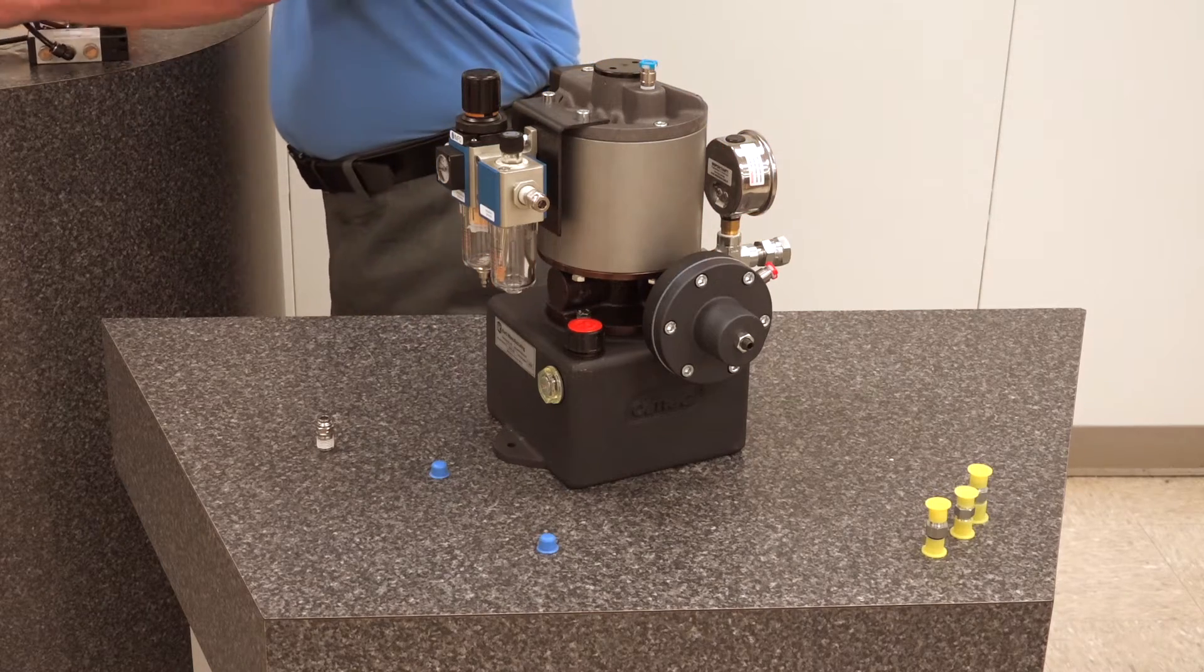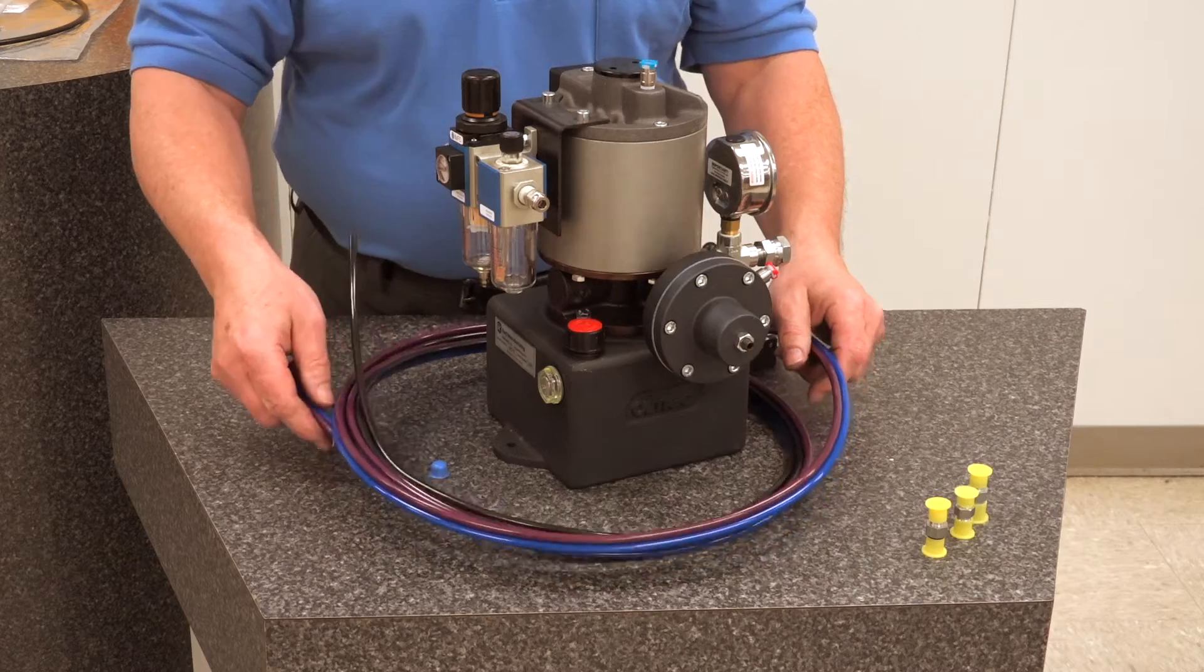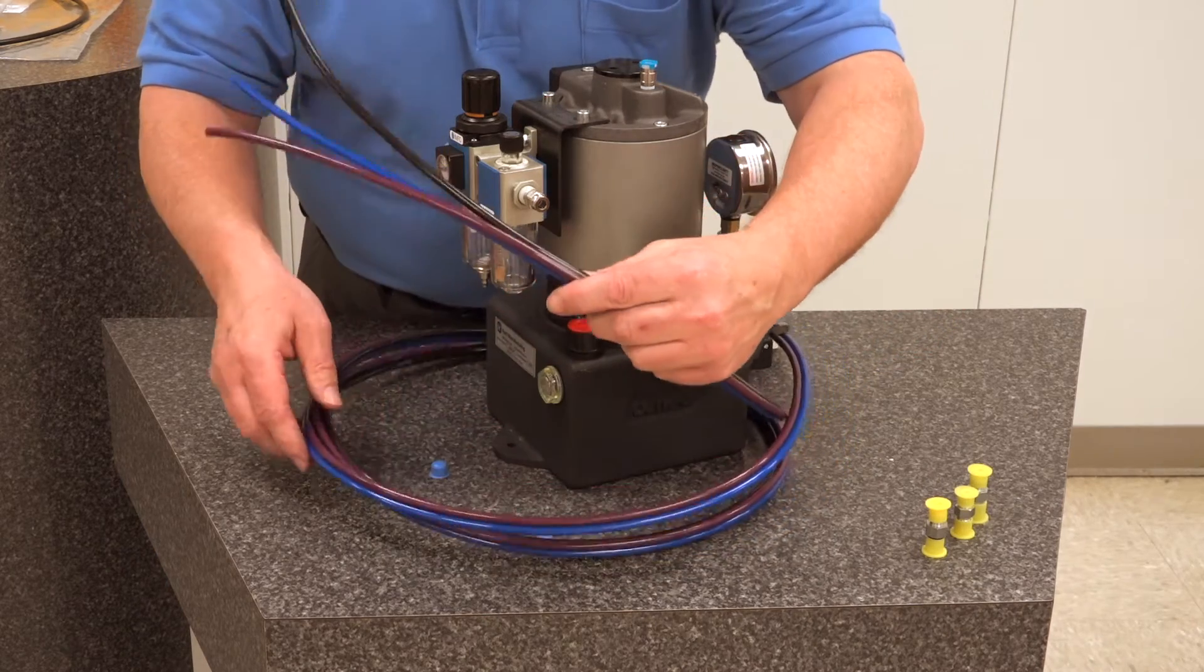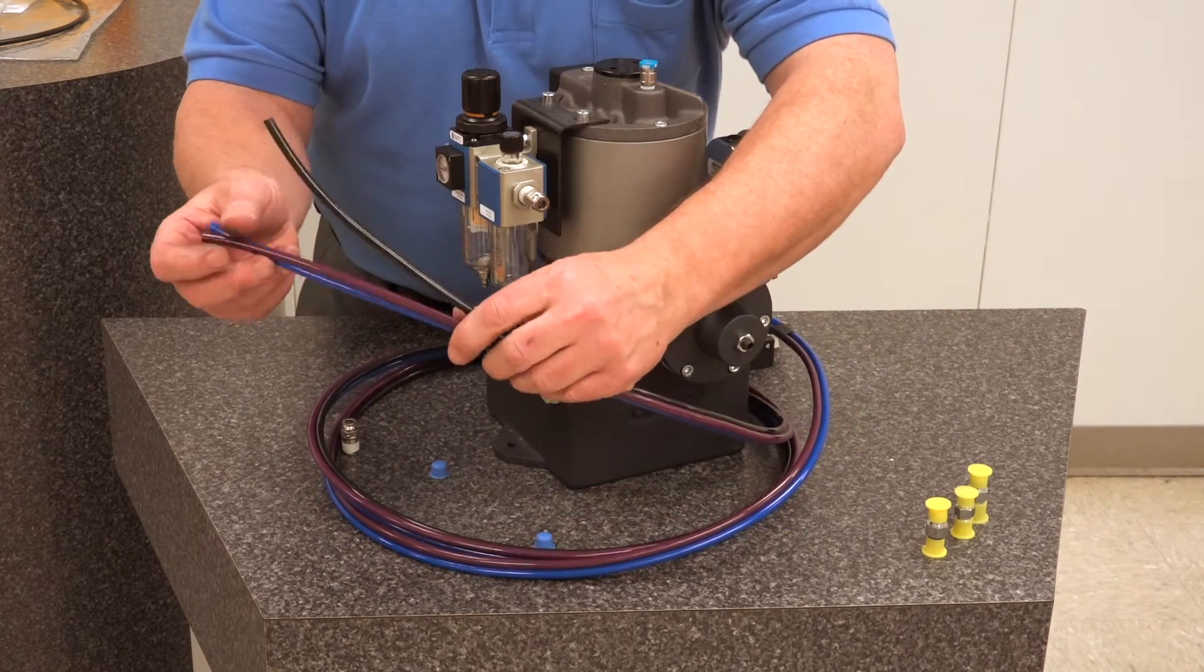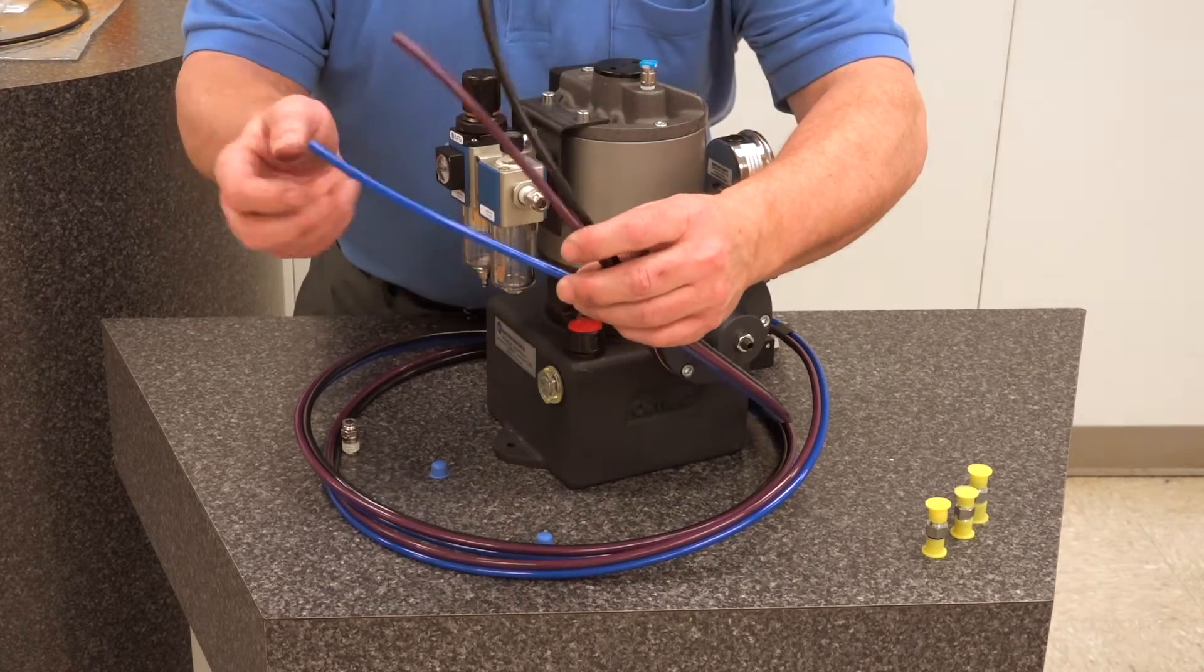Those will connect with our hand valve here, and you'll see that the lines are actually color-coded. This one is purple—it will be red, blue, and black—and you simply hook them.